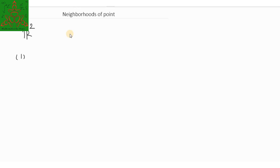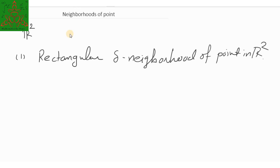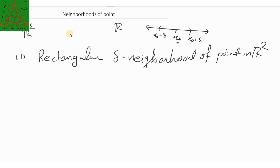The first one is a rectangular neighborhood. In R, if you are given a point on a real line — let's say that point is x₀ — the neighborhood of x₀ is the open interval (x₀ minus delta, x₀ plus delta). This is the delta neighborhood of point x₀; it contains the neighboring points of any given point.